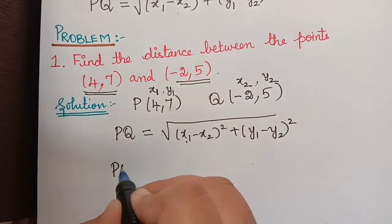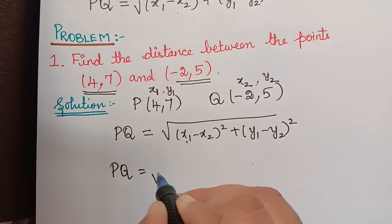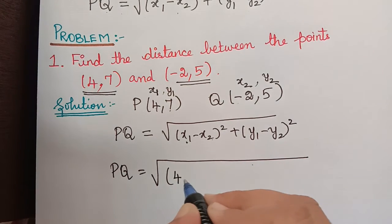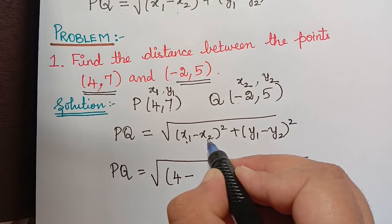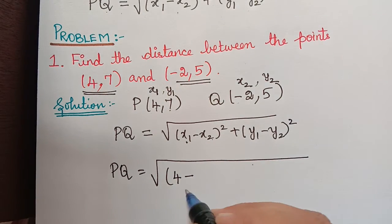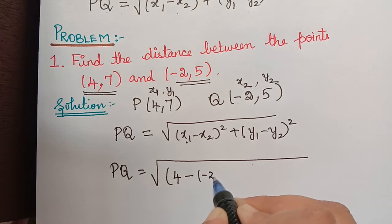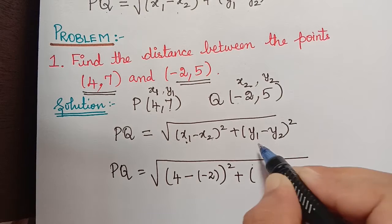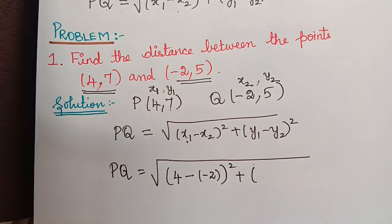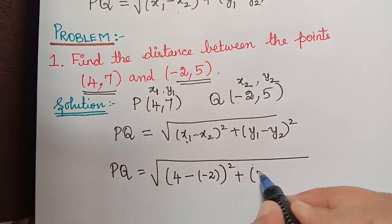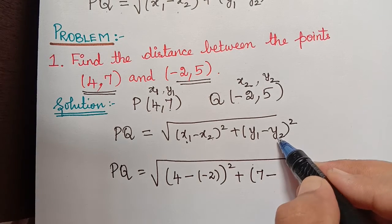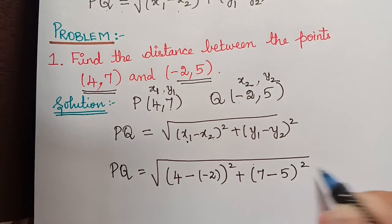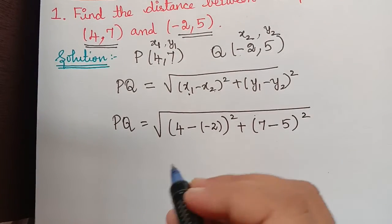So let us substitute those values. Therefore PQ will be equal to square root of: x1 is 4, minus x2 which is minus 2, so 4 minus (minus 2), the whole square, plus y1 which is 7, minus y2 which is 5, so 7 minus 5 the whole square.